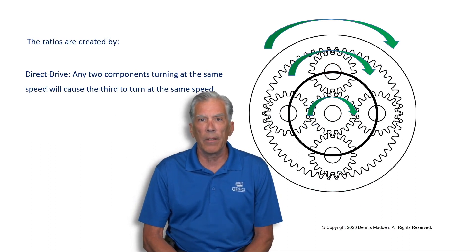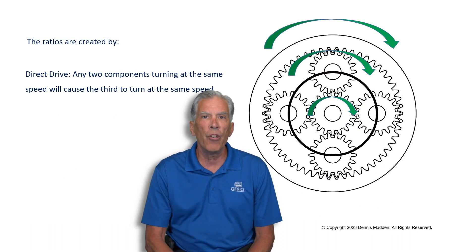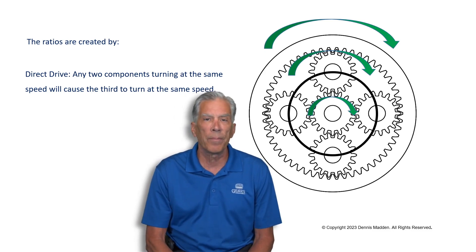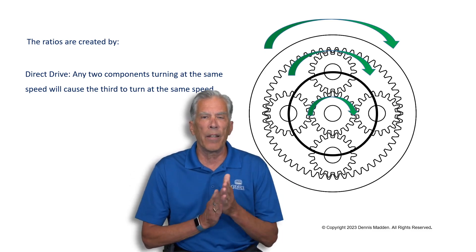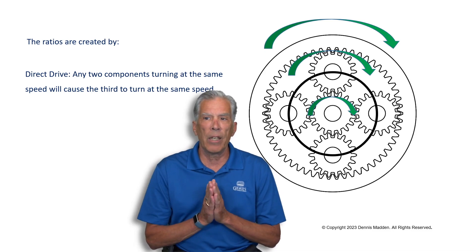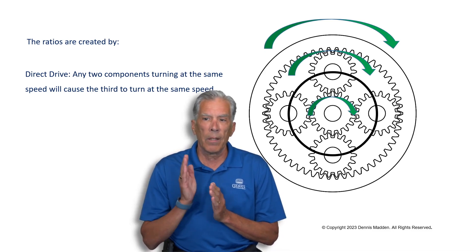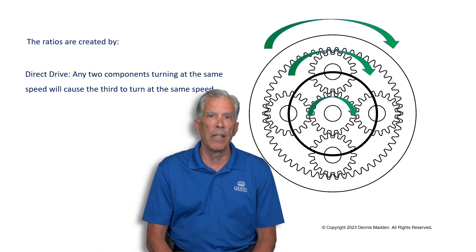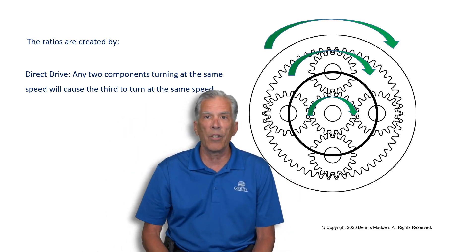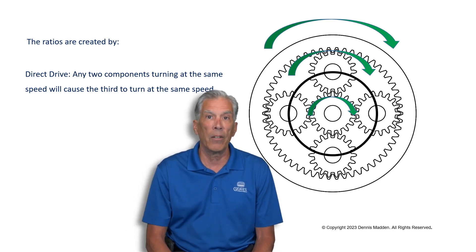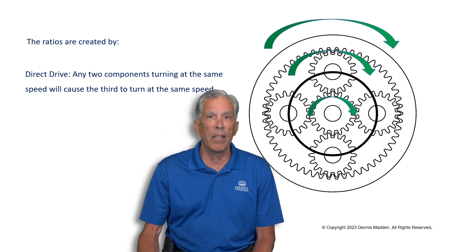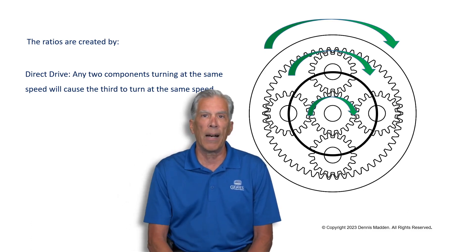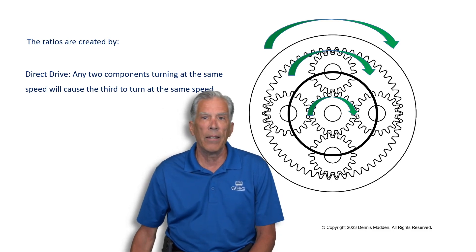One last important point: anytime two components of a gear train are turning in the same direction and the same speed, the third will always follow. We'll see an example of this in the hydraulics chapter. For instance, lock the planet with the ring gear — the sun gear output and all three turn at the same direction and speed. It could be any two: planet and sun, ring and sun — the rule is any two components turning the same direction and speed, the third must follow.